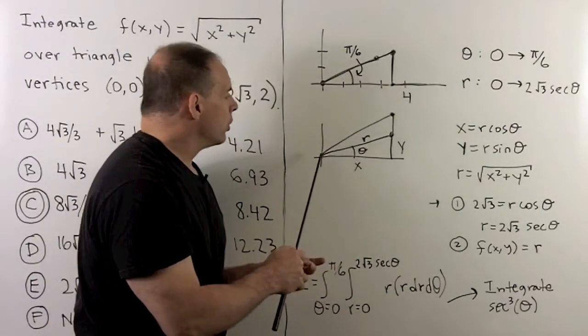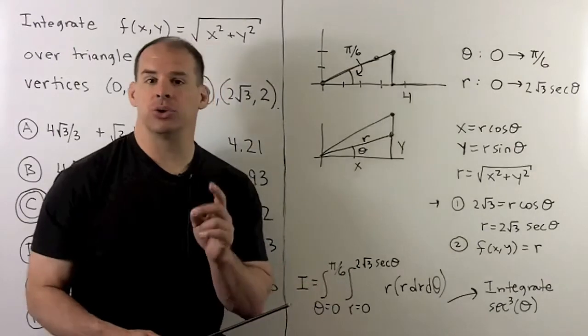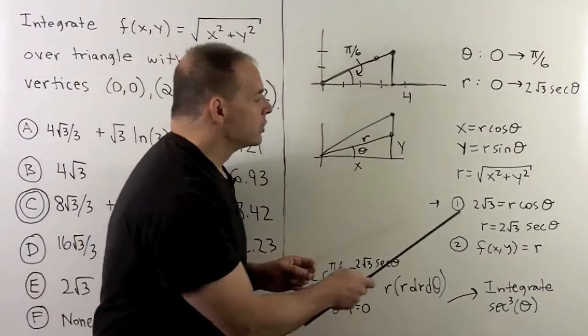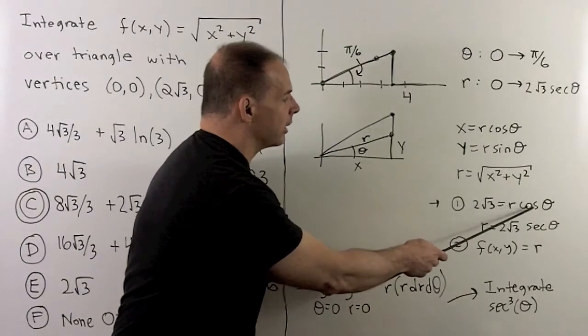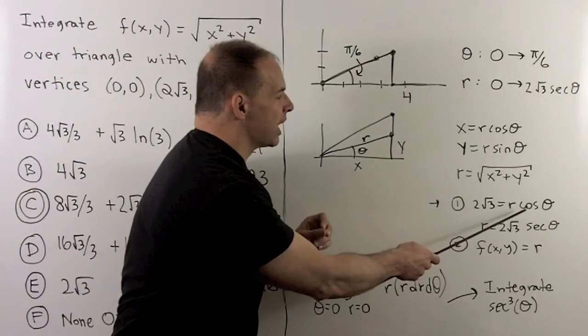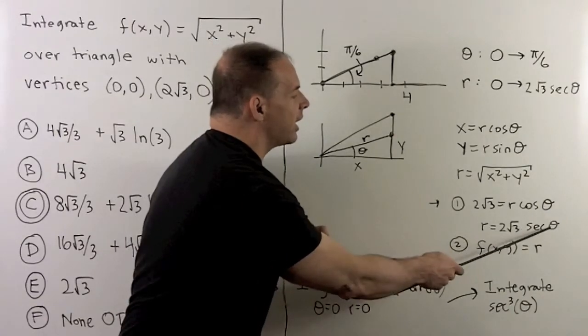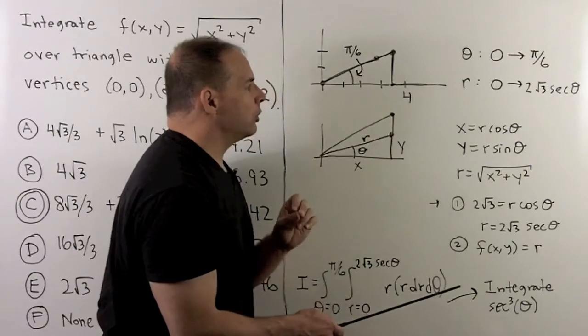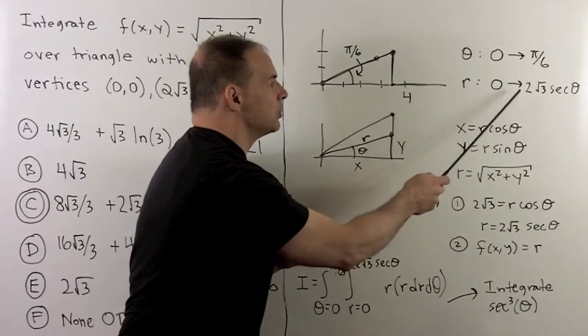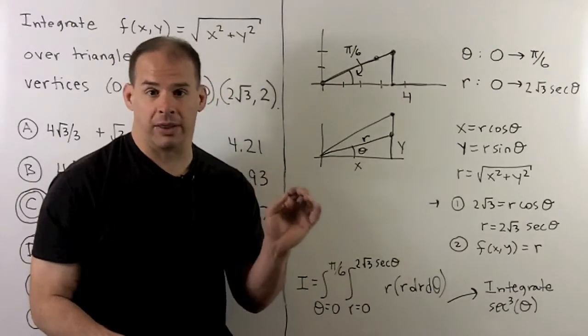Now, first thing we note, for the big triangle, the x is never going to change. It's always going to be 2√3. So we'll have that 2√3 is equal to x, which is r cosine theta. If we divide both sides by cosine theta, 1 over cosine theta is secant theta, so I have this formula for r. The range of r that we'll use is going to go from 0 to 2√3 secant theta. Note that's going to depend on the theta that we're using.